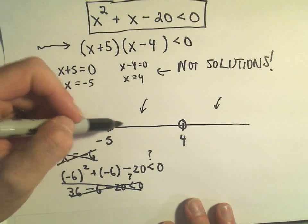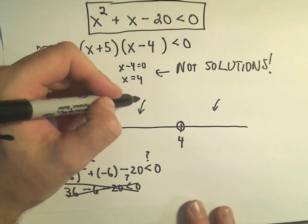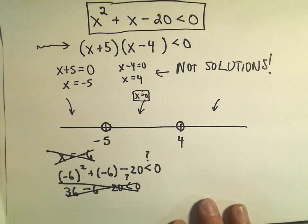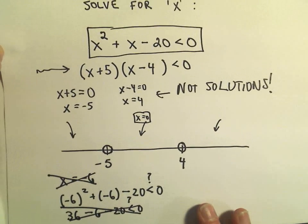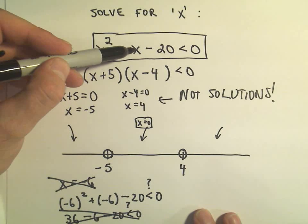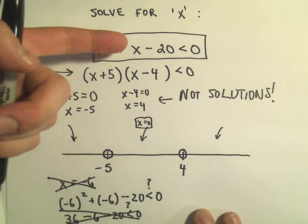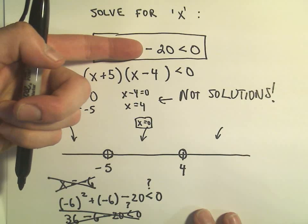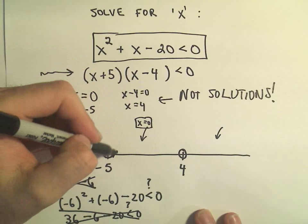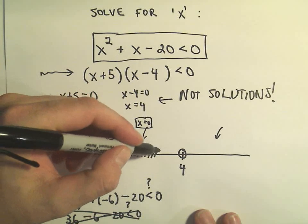Okay, next we'll ask ourselves, we'll take a number between negative 5 and 0. I'm going to use any number at random, I'm going to use 0, just because that'll make the arithmetic easy. And notice if we plug 0 in, we'll get 0 squared plus 0, which just leaves us with 0. And then we would be left with negative 20. Negative 20 is less than 0, so that tells me everything in the middle works.